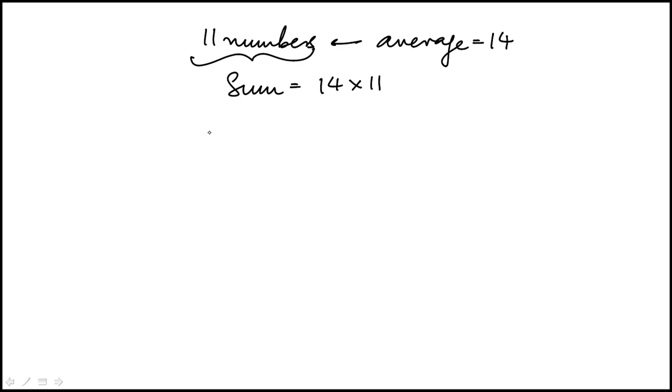And then we're given that the average of 9 of the numbers, the average is 9. So the sum of these 9 numbers, I'm actually going to use this little subscript here to represent that this is the sum of 11 numbers. So sum of 9 numbers would be 9 times 9.